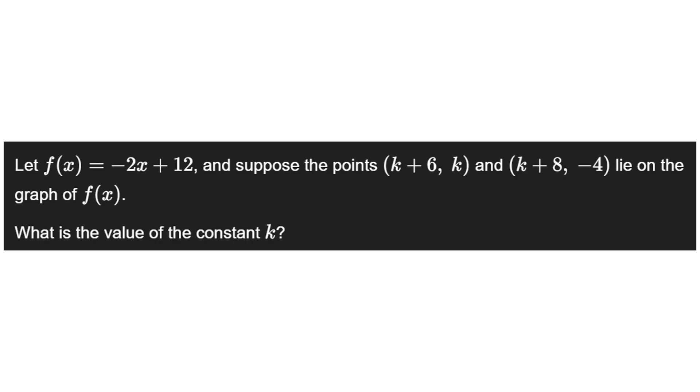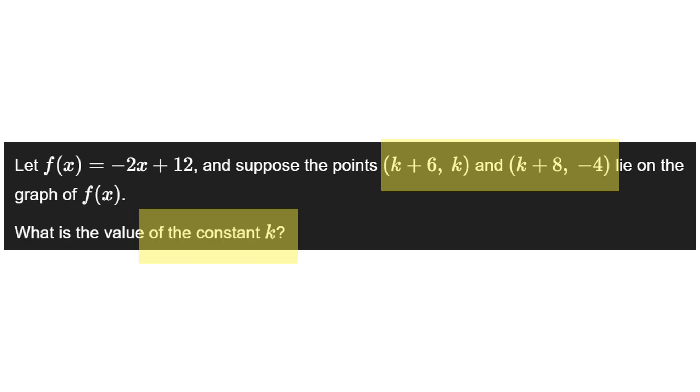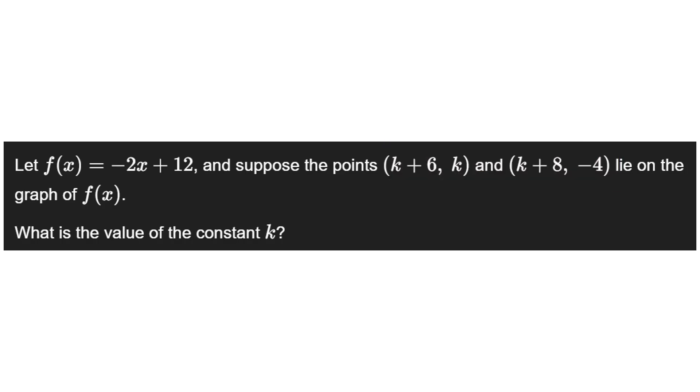Okay so this is the first problem. This problem gives us an equation and tells us two points that land on the equation. We're looking for the constant k and one of the points is in terms of k while the other gives us a pure value, negative 4.